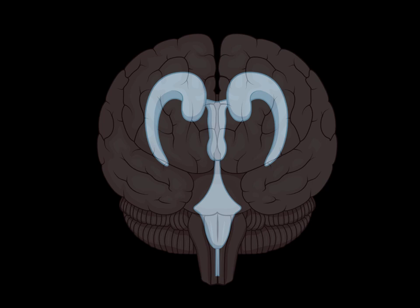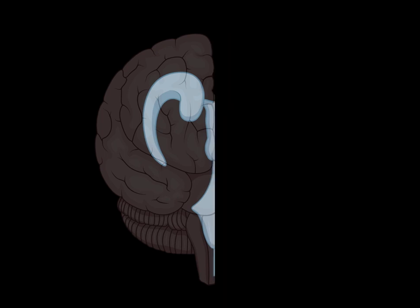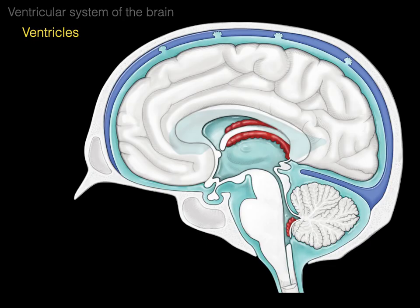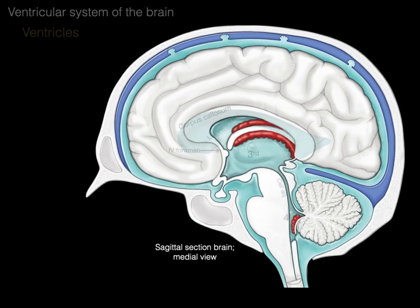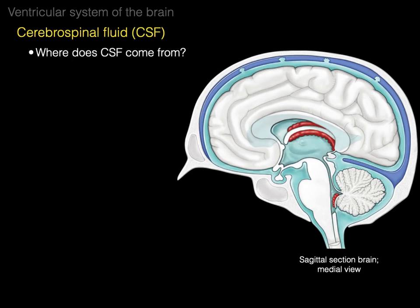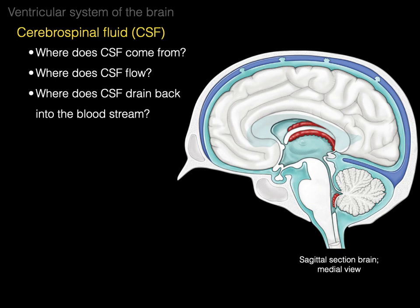Now we're going to separate this brain in half, remove one hemisphere, and look at a sagittal section through a medial view. There is our corpus callosum. Below the corpus callosum is the lateral ventricle, which communicates via the interventricular foramen with the third ventricle, and the third ventricle, through the cerebral aqueduct, communicates with the fourth ventricle. The fourth ventricle communicates with the subarachnoid space. There are three questions to answer: Where does CSF come from? Where does CSF flow? And where does CSF drain back into the bloodstream?